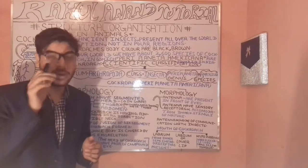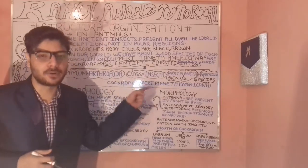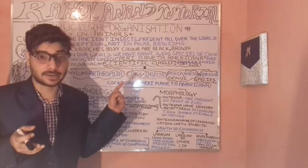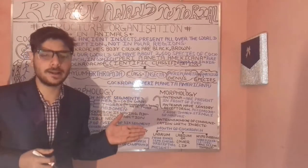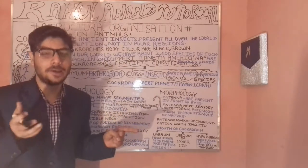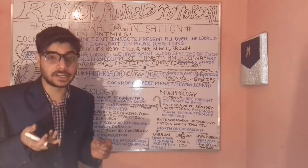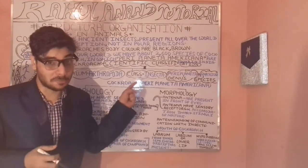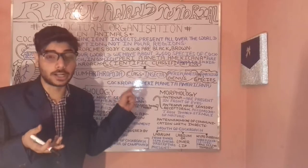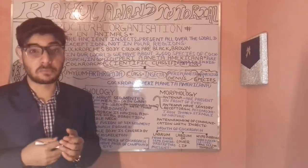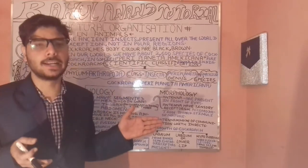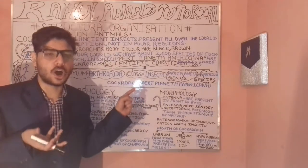These topics belong to the chapter on structural organization. Let's understand what cockroaches are. Cockroaches are ancient insects found all over the world, with the exception of polar regions where there is a cold environment. The body color of cockroaches is brown as well as black in nature.